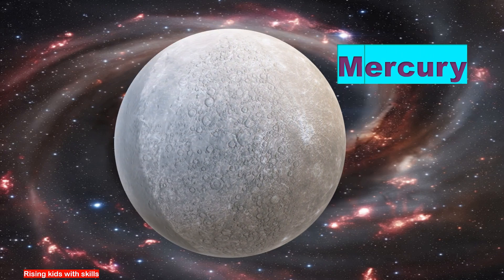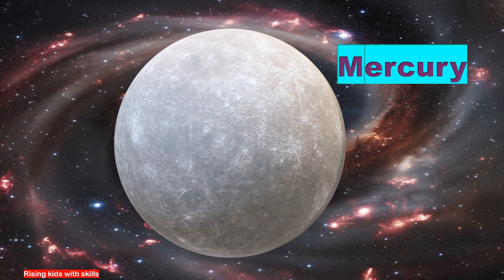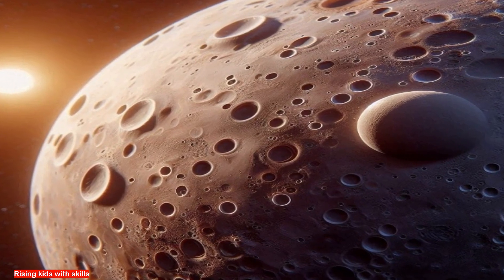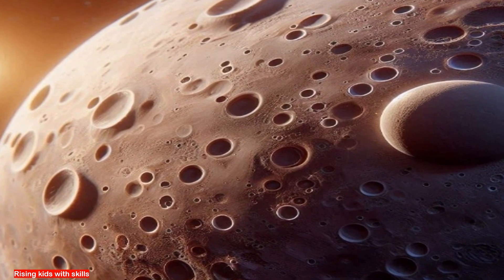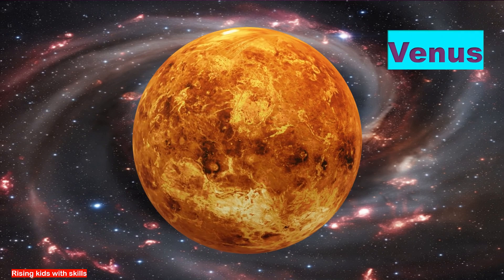This is Mercury, the smallest and closest planet to the Sun. Mercury has no atmosphere. It is extremely hot during the day and freezing at night.